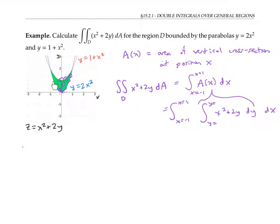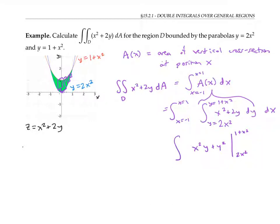The lower bound of integration is the y value lying on this curve, so that's two x squared, and the upper bound is one plus x squared. Now I have an expression I can integrate. I start from the inside and integrate this function with respect to y. I'm still going to have to integrate that answer with respect to x between x equals negative one and one.